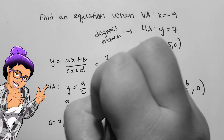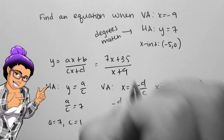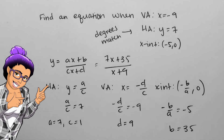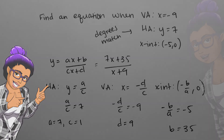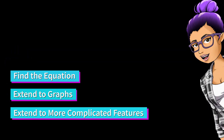In order to check my work, I'll find the vertical asymptote, horizontal asymptote, and x-intercept to make sure they match up with what I was given. You can now find an equation from a few features of a rational function. You could apply this to more complicated rational functions as well as pulling features from graphs to create an equation.